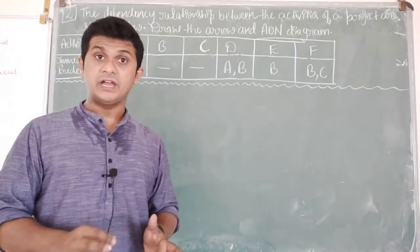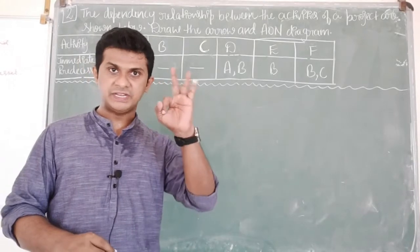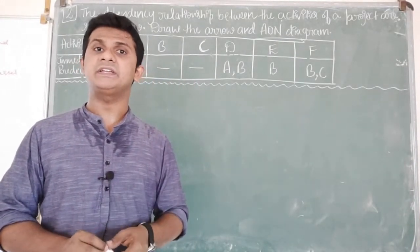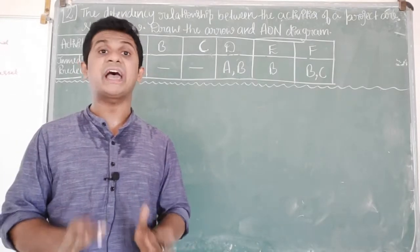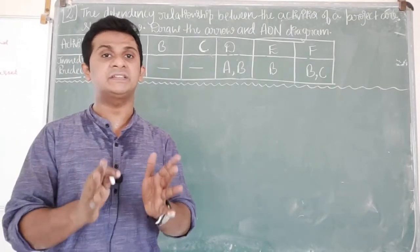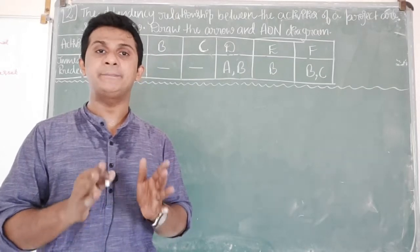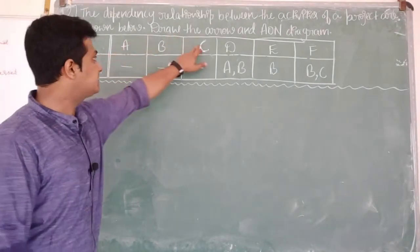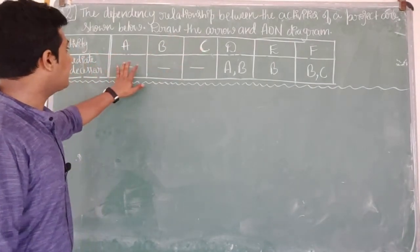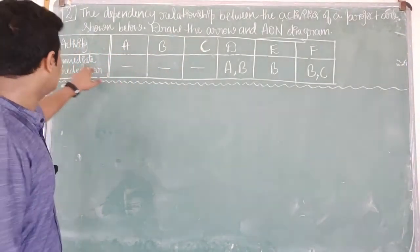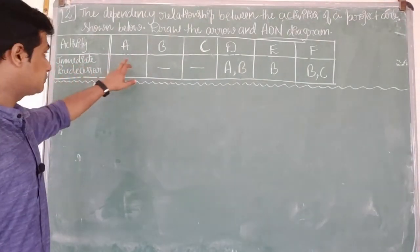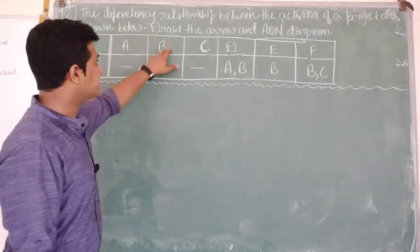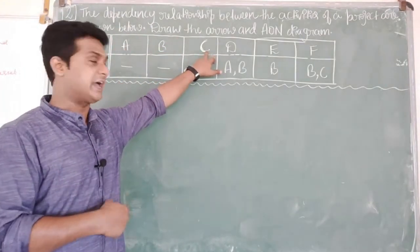In drawing an arrow diagram, we have to give due consideration to three aspects. First, we have to identify the starting activities — those activities which do not have any immediate predecessor, meaning no preceding activities. Looking at the question, activities A, B, and C do not have any preceding activity, so they become the starting activities in our arrow diagram.